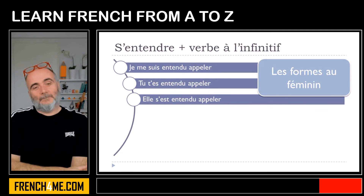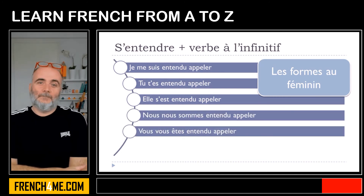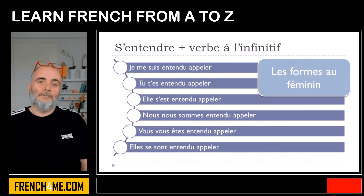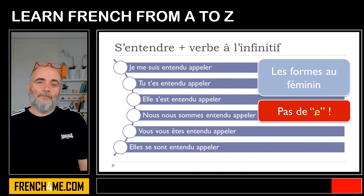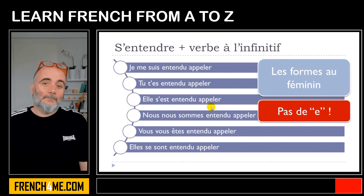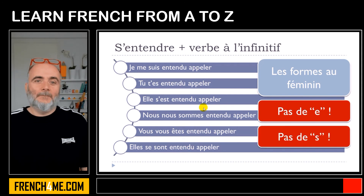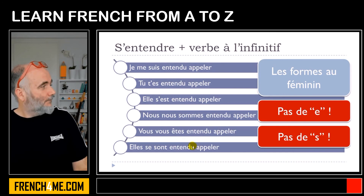For the feminine form: je me suis entendu appeler, tu t'es entendu appeler, elle s'est entendu appeler, nous nous sommes entendu appeler, vous vous êtes entendu appeler, elles se sont entendu appeler. It is exactly the same — even though it's feminine, you do not add the e or the s at the end of the participe passé.